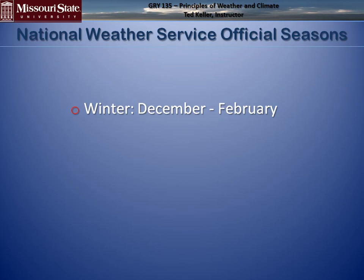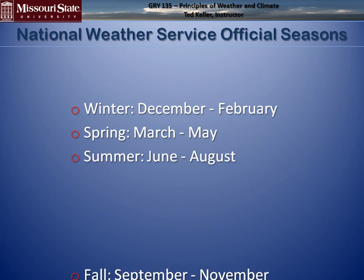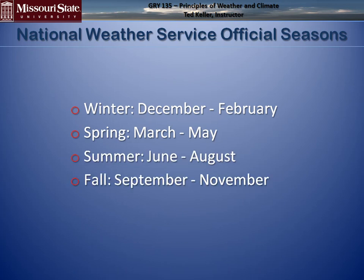The National Weather Service defines the official meteorological seasons broken down into three-month intervals — winter is December through February, and so on. More will be covered in another upcoming video lecture.